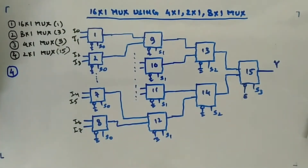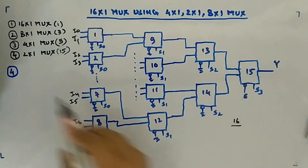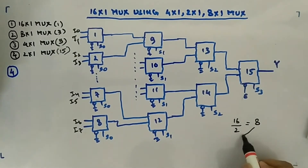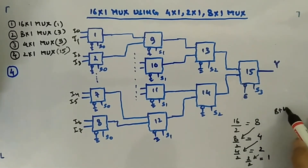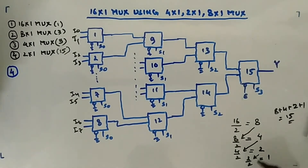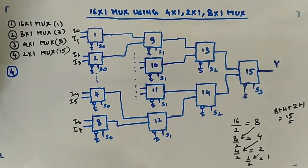There's a quick shortcut. We want 16, have 2:1, so divide by 2 repeatedly: 16/2 = 8, 8/2 = 4, 4/2 = 2, 2/2 = 1. Total is 8 + 4 + 2 + 1 = 15. So if you just need to calculate how many 2:1 MUXes are required, use this approach. If you need to draw them, use the ladder structure as shown.